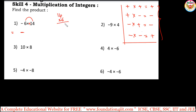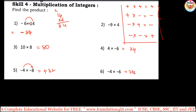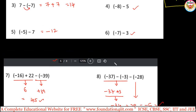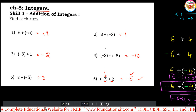Take 14 times 6: 6 times 4 is 24, carry 2, 6 times 1 is 6 plus 2 is 8, so 84. The answer is minus 84. For plus 10 times 8: plus into plus is plus, so the answer is positive 80. For minus 4 times minus 8: minus into minus is plus, so just multiply 4 times 8 to get plus 32. Notice that when numbers are the same but signs differ, the sign determines the result. Always multiply the signs first, then the numbers, to be perfect in integer multiplication.